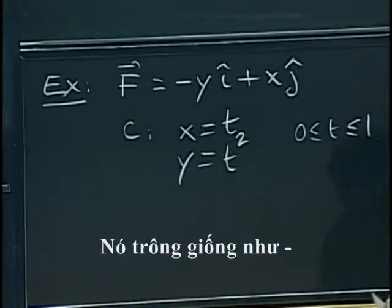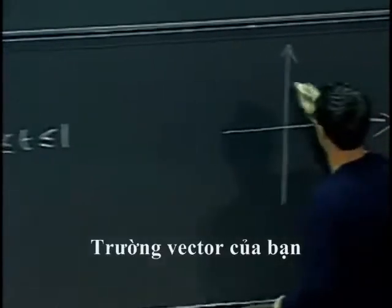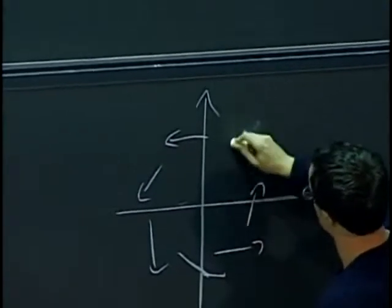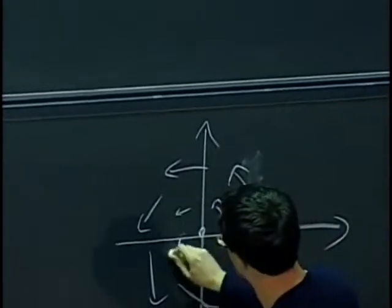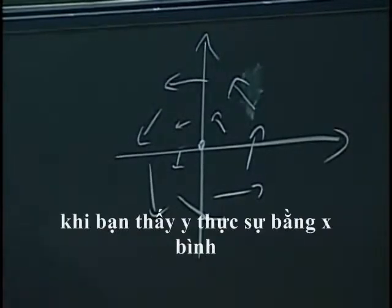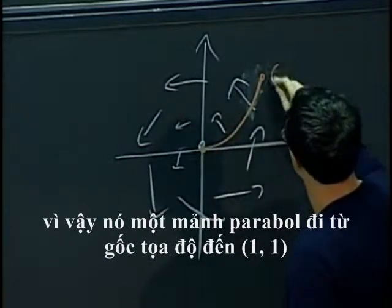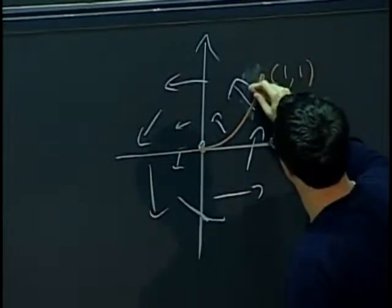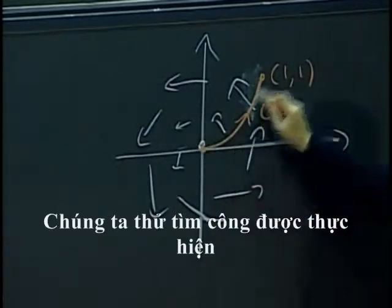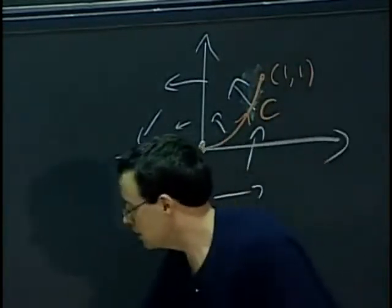OK, so what that looks like, maybe I should draw a new picture. So, our vector field, whatever. And, our trajectory, if you try to plot this, when you see y is actually x squared, so it's a piece of parabola that goes from the origin to (1,1). OK, that's what our curve looks like. OK, so we're trying to find the work done by our force along this trajectory.